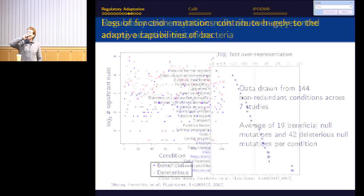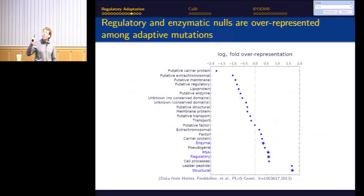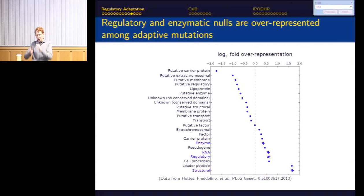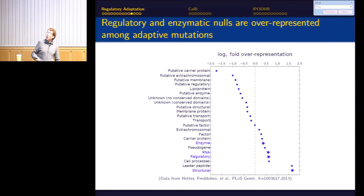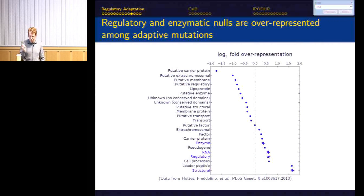Looking at which gene classes are over-represented among knockouts that give beneficial phenotypic effects, the four significantly over-represented classes are structural genes, regulatory genes, RNA, and enzymes. Regulators show up prominently through both direct and indirect effects, underscoring how important they are to population adaptation.